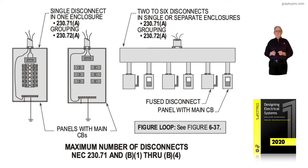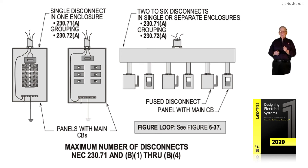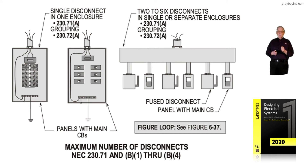When you have those two to six mains, we will also have to review — and we'll review in this chapter 6 — 230.80 and 230.90, with the exceptions, and just exactly how those mains would have to be designed. The full ampacity of those mains would not have to match the ampacity of the conductors at all when we start reviewing 230.80 and 230.90, exceptions 1, 2, or 3.